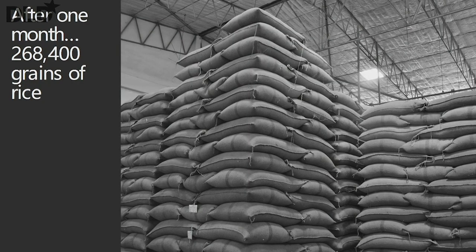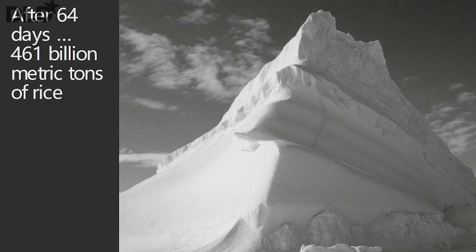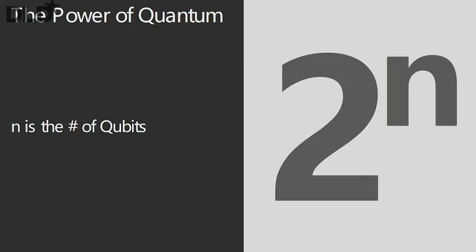On the first day he got one grain of rice, the second day two, the third day four — not even a meal. After a week he had 127 grains. After one month it piled up to almost 270,000 grains of rice. After 64 days — when the checkerboard was filled — he ended up with 461 billion metric tons of rice, which is a thousand times the amount of rice the world produces today. This is the power of exponentials, and this is what quantum computers use for their performance.